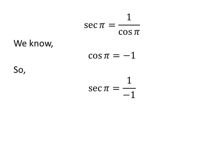Let us apply the above identity in the above expression of secant of pi, so secant of pi is equal to 1 upon minus 1.